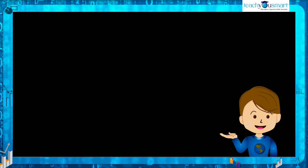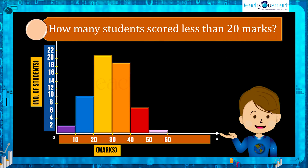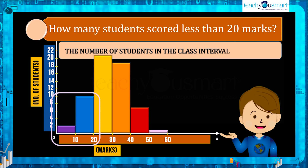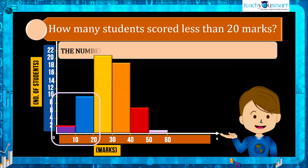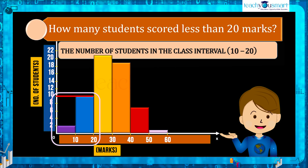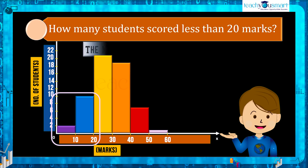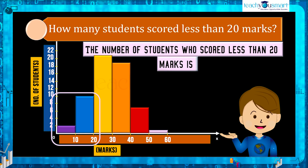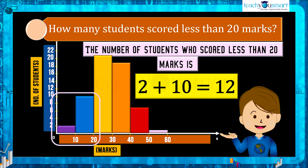Next: how many students scored less than 20 marks? The number of students in the class interval 0 to 10 is 2, where 0 is included and 10 is excluded. In the class interval 10 to 20 the number of students is 10, where 10 is included and 20 is excluded. Therefore the number of students who scored less than 20 marks is 2 plus 10 equals 12.